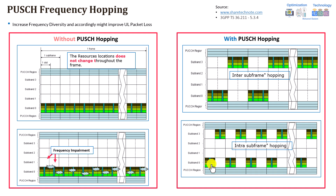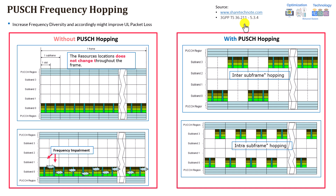Frequency selective scheduling is more beneficial in this particular scenario because it selects clean resource blocks from the beginning. Frequency hopping can mitigate but cannot completely eliminate the issue, because you might still encounter interference at a given sub-band whenever the allocation is made. So that was the main idea of today's features. The next session will cover the last remaining features and will close this training.